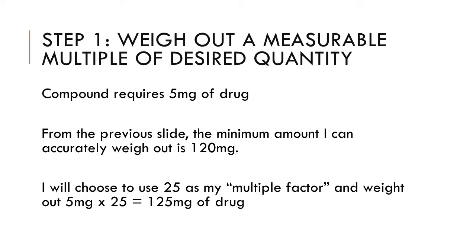Let's say that I'm making a compound that requires only 5 mg of drug. We determined that the minimum amount I can accurately weigh out with 5% error is 120 mg, so clearly that's a lot more than 5 mg. In order to make this compound, I'm going to have to weigh out at least 120 mg and then measure out an aliquot part that's going to contain the 5 mg of drug that I actually want.